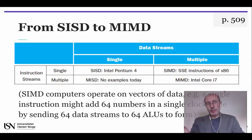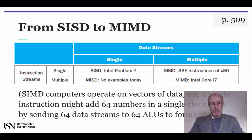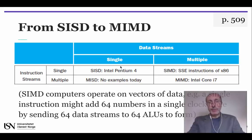This categorization of parallel hardware based on the number of instruction streams and the number of data streams was proposed in the 1960s but is still in use today. A conventional uniprocessor has a single instruction stream and a single data stream — that's the SISD case on the top left of this representation, of which the Pentium 4 is a well-known example.